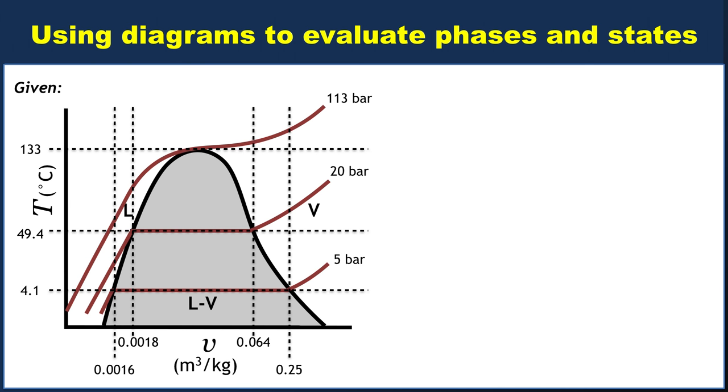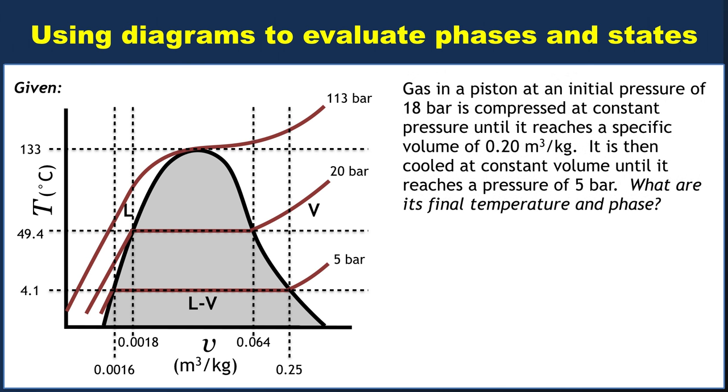So now we're going to use this TV diagram to answer two different kind of complicated looking questions. The first one is that gas in a piston at an initial pressure of 18 bar is compressed at constant pressure until it reaches a specific volume of 0.20 cubic meters per kilogram. It is then cooled at constant volume until it reaches a pressure of 5 bar. What are its final temperature and phase? Part of the difficulty in answering questions like this is just parsing out what they're asking in words, trying to relate that to what's in the diagram. So let's do what we can.